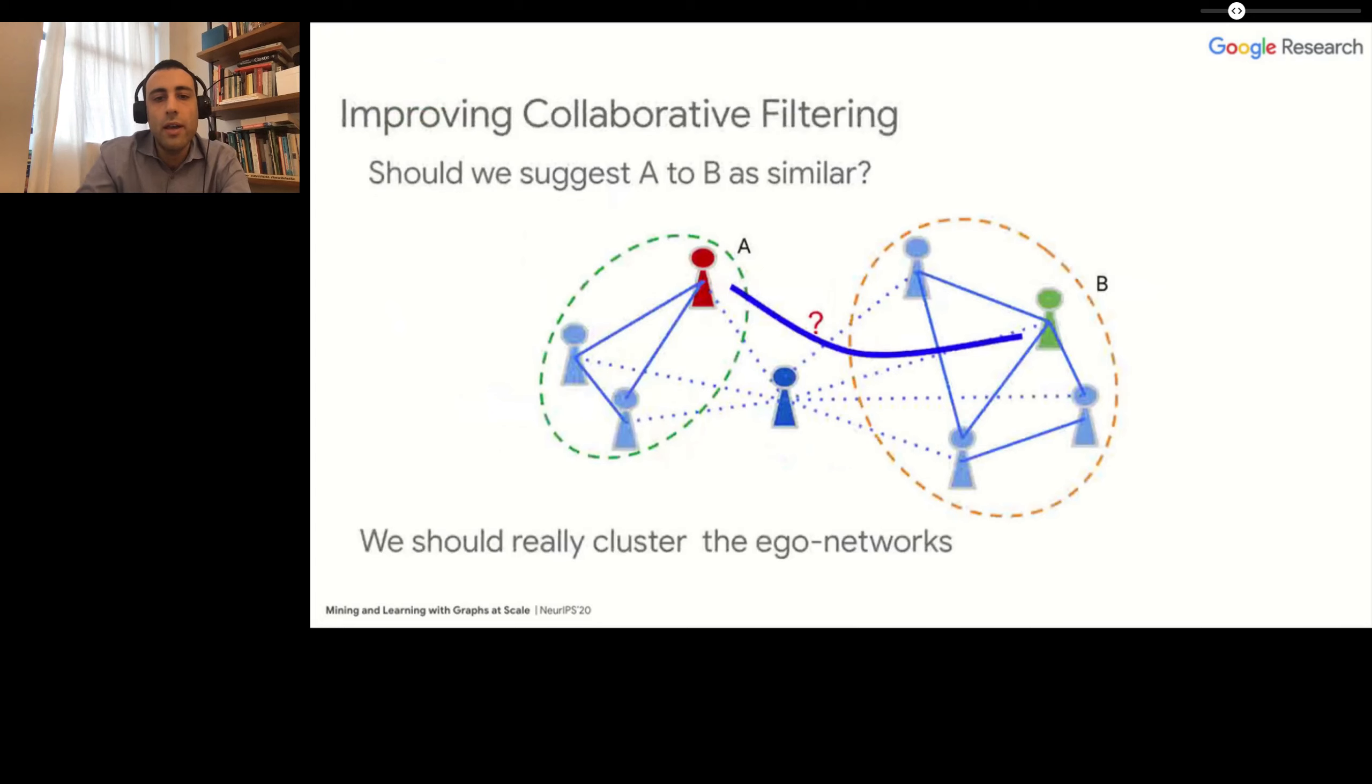So if we cluster this ego network, we identify precisely these two separate communities. So now the question is, should we really recommend to node A, node B? Are node A and node B related to each other? If you think that these two communities are actually disjoint and represent perhaps the family of the ego network in one case and the work of the ego network, perhaps this is not really a good suggestion.